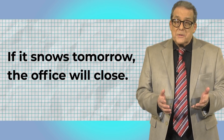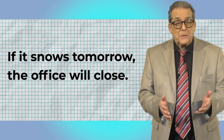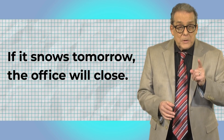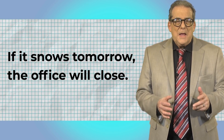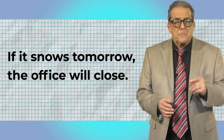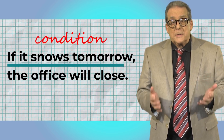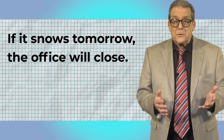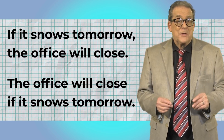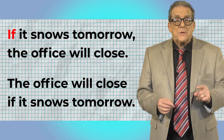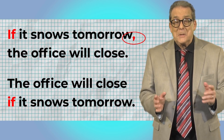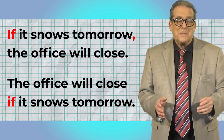You just heard an example. We use the first conditional to talk about things that might happen in the future. So this means snow is not certain, but it's a real possibility tomorrow. The sentence has two parts, two clauses. One is the condition and one is the possible result. You can reverse the order of the clauses and it means the same thing. If the sentence starts with 'if', we generally use a comma. If 'if' comes in the middle of the sentence, the comma isn't necessary.